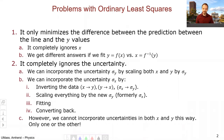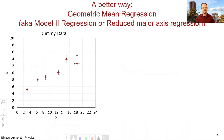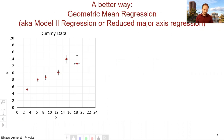So these are the two big problems with ordinary least squares. Now let's introduce a better way: the geometric mean regression. This method is also known as the model 2 regression or the reduced major axis regression, so it has a couple of different names depending upon the discipline, but it's all the same thing.